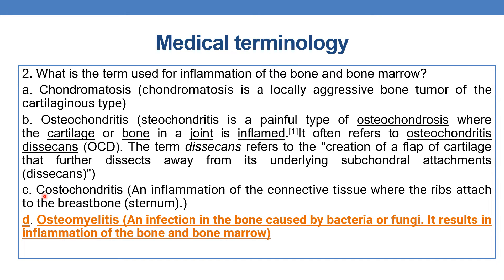Option C is costochondritis — costo means ribs, and costochondritis is an inflammation of the connective tissue where the ribs are attached to the breastbone, or sternum. Finally, option D is osteomyelitis. Osteo means bone and myelo means bone marrow. Osteomyelitis is an infection in the bone caused by bacteria or fungi, and it often results in inflammation of bone and bone marrow. So the term used is osteomyelitis.